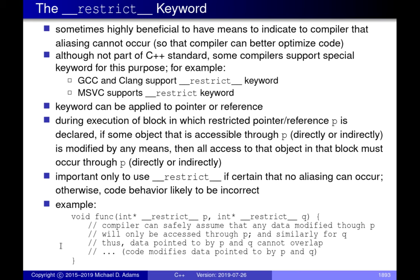How can we combat this problem? Suppose we know, because of how we're calling the function, that aliasing will never happen — knowledge the compiler doesn't have. The compiler just sees the function and must consider all possible ways it could be called. It asks: is it theoretically possible for someone to call this code in a way that causes aliasing? The answer is yes, so it assumes the worst. We want to annotate our code to signal to the compiler that aliasing cannot happen.